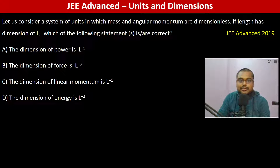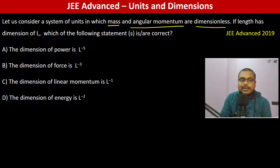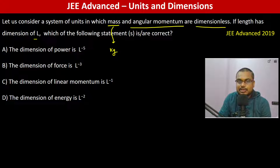Let us consider a system of units in which mass and angular momentum are dimensionless. If length has the dimension of L, which of the following statements are correct? Angular momentum is I·omega.